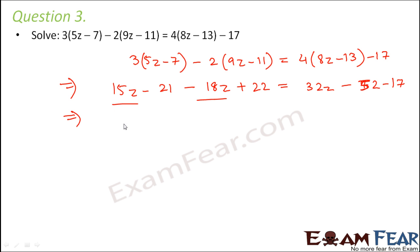So again the same thing, let's first bring all the variables on one side. So 15z - 18z and from here also we will bring -32z will be equal to -52 - 17 - 22 + 21. So let us solve this. So this would become 15z - 50z is equal to this entire thing would be equal to -91 + 21.